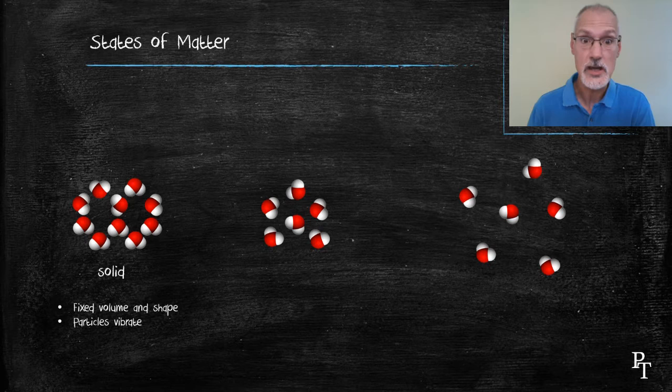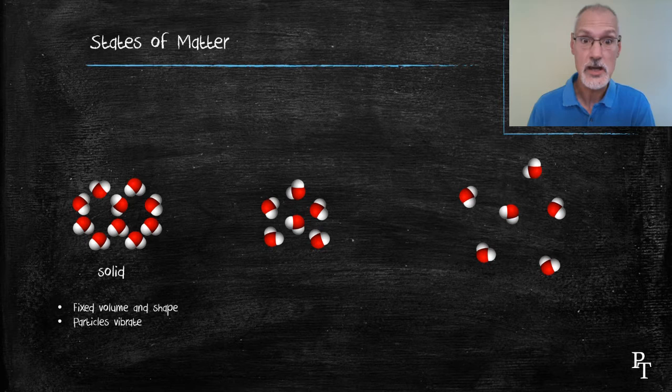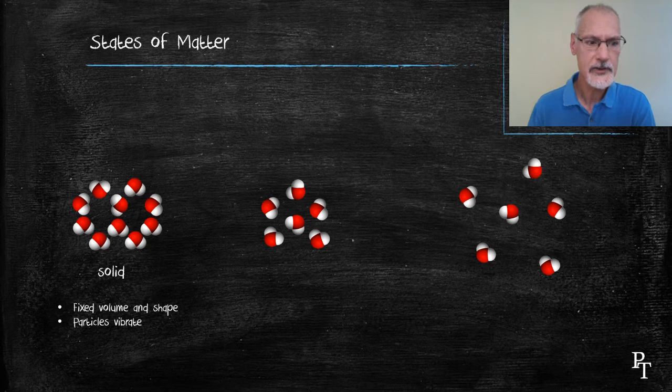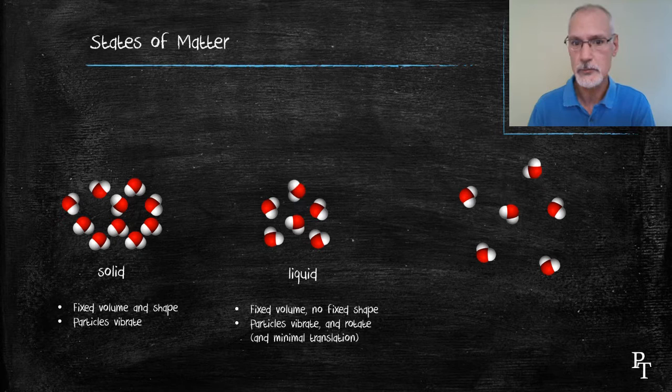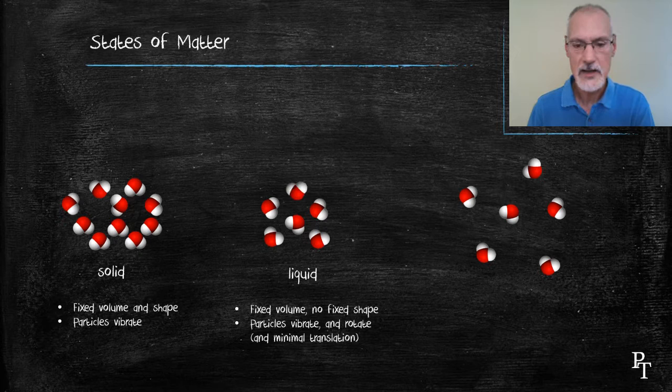We begin with a solid. Solids have both fixed volumes and fixed shapes. This is due to the lattice or network in which they're arranged, and the particles essentially possess a vibrational motion back and forth. When we turn these into a liquid, we now have something that has a fixed volume but its shape can change. And the particles tend to possess a rotational motion, but they can also vibrate and they can also move slightly from spot to spot. We call that translational motion.